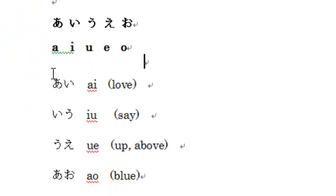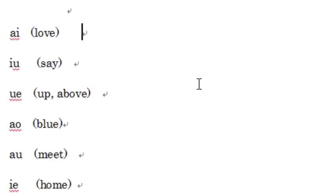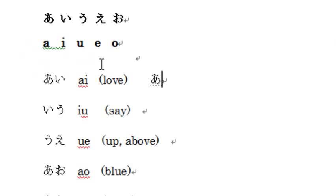Let's practice. The first word is 'ai' (あい). As most of you know, it means love. So let's go back to hiragana and type 'a', 'i' — ai. Confirm with Enter. Or if you want to type it in katakana, after you type 'ai', press F7.